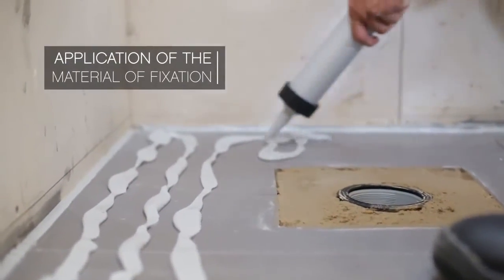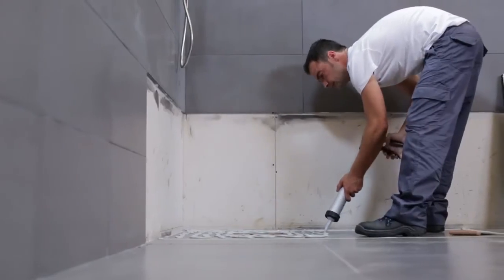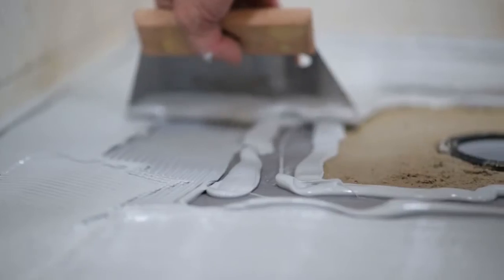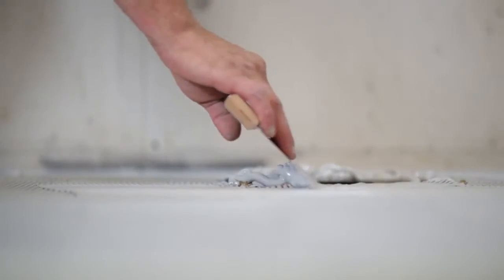After application of perimeter sealant, prepare and apply generously low-density fixing material to the base and extend evenly using a serrated spatula over all the base surface.